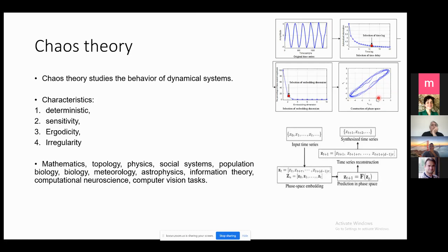This is obtained based on different methods. We can embed the time series or image into the state space or phase space based on estimating time delay and the embedding dimension of the signal. Based on the state space, we can analyze the chaotic system. Using this map, we can apply it for modeling, synthesis, prediction estimation, and similar tasks. This can be applied for different applications: mathematics, neuroscience, and computer vision tasks.